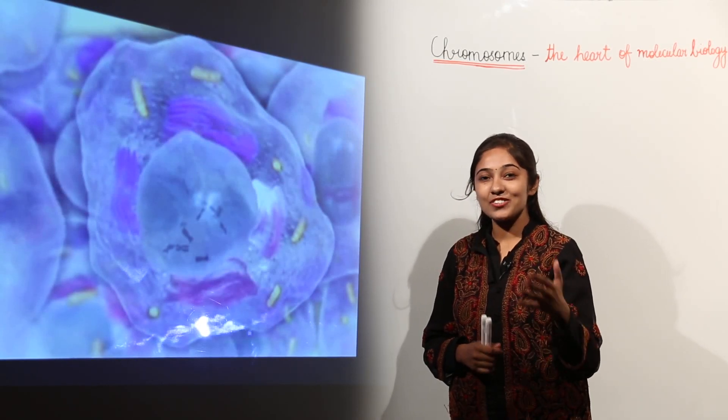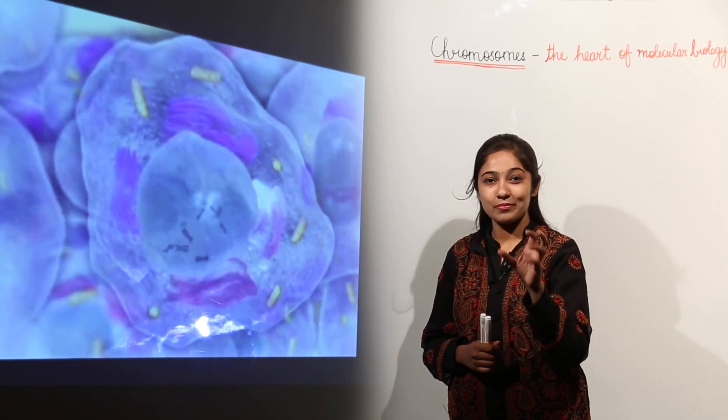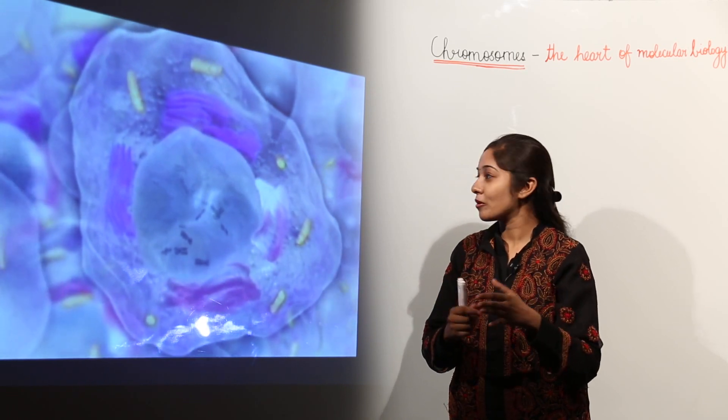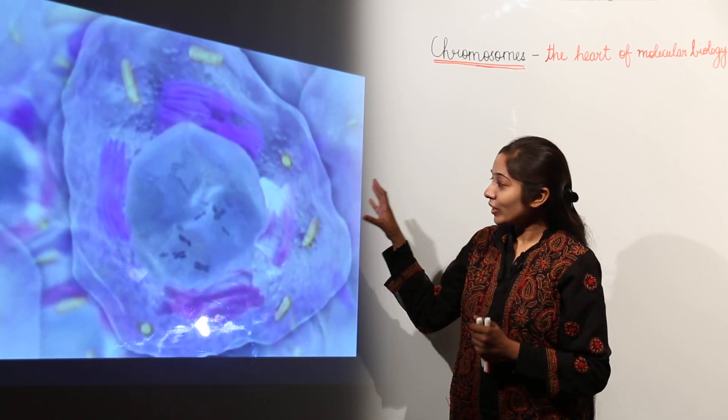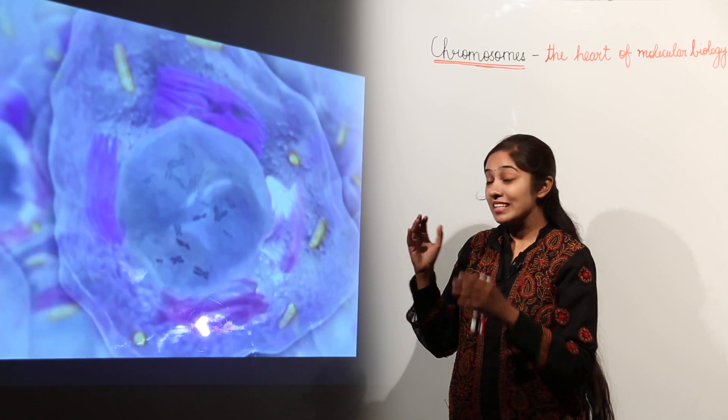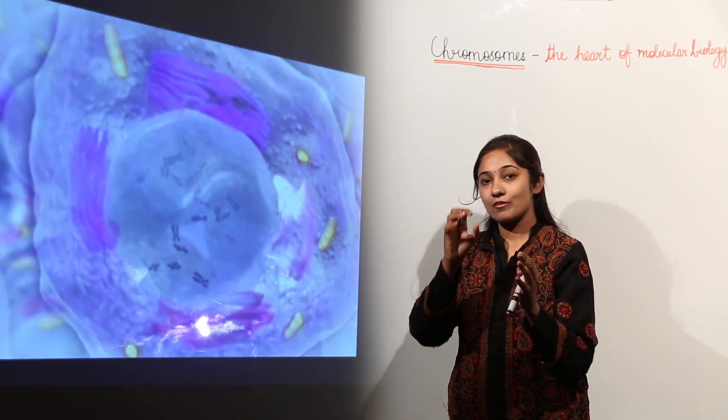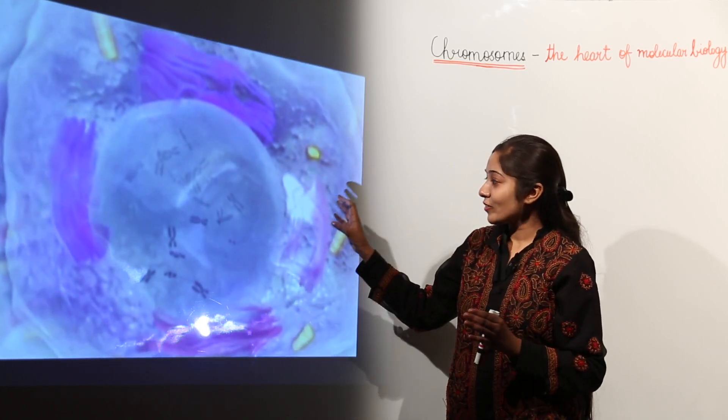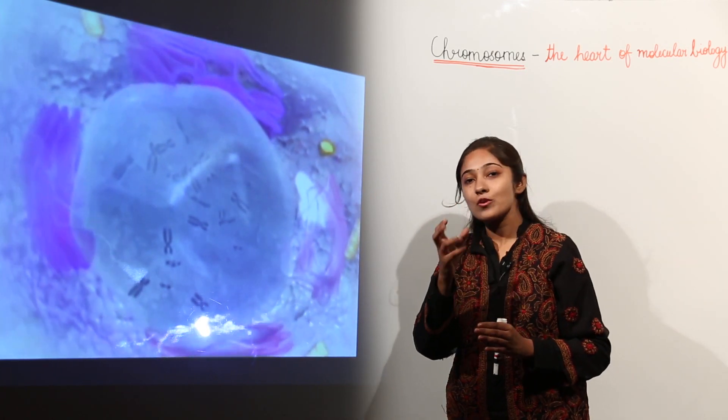Let us recall how these structures known as chromosomes are present in the cell and how they are formed. In the nucleus of a cell, during cell division phase, prophase, these structures known as chromosomes are visible.